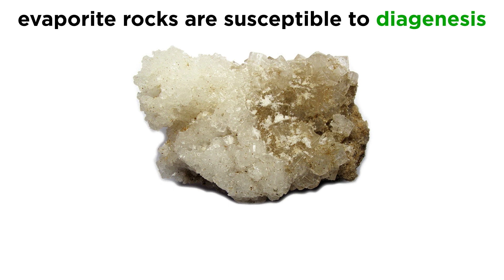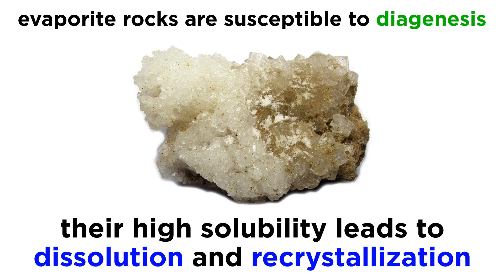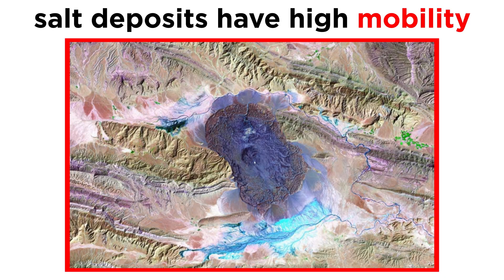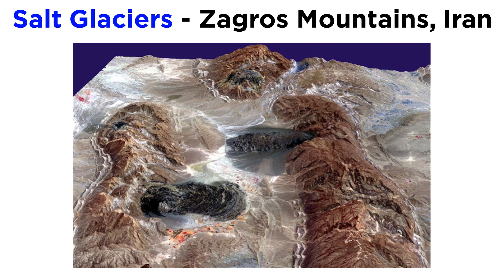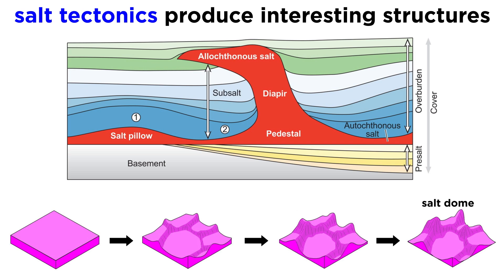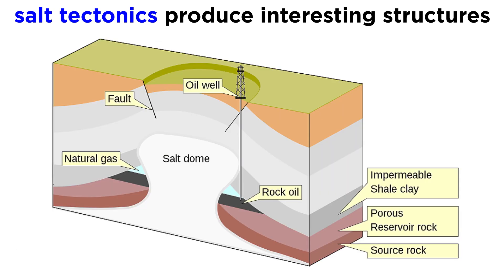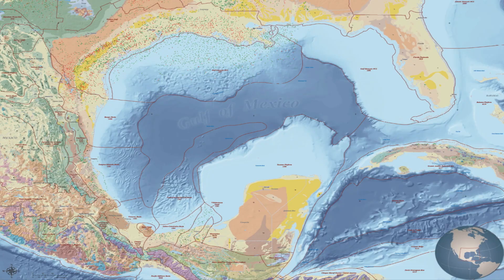Evaporite rocks are extremely susceptible to diagenesis because they are so soluble, therefore it is very common to find substantial dissolution and recrystallization, especially in older deposits. Salt deposits also have the unusual property of high mobility, causing them to behave more like viscous magma than solid rock if they are buried deep enough. There are many places on earth where salt is rising up through the crust, and even erupting from the surface in some cases, as in the many salt glaciers of Iran. The movement of salt after deposition, or salt tectonics, creates many interesting geologic structures such as salt domes, which often make great structural traps for oil and gas. The oil deposits in the Gulf of Mexico are a great example of this.